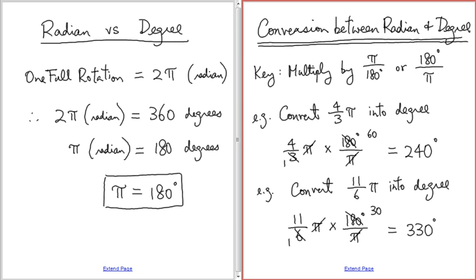Unit is absolutely important, especially when we are talking about two different kinds. Just like if you tell people you have 100 and then pay with 100 pennies — you're not lying, but the unit matters. Make sure you make it clear. It's not 180 over pi, it's 180 degrees over pi.